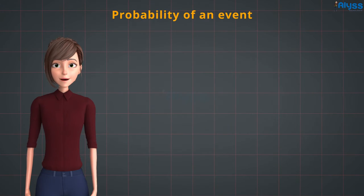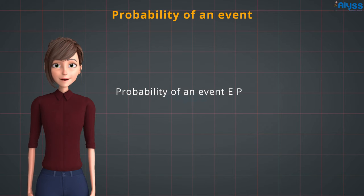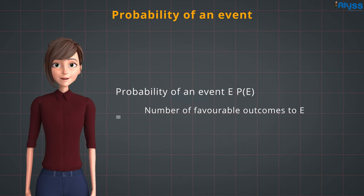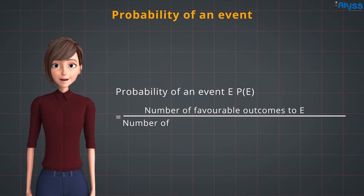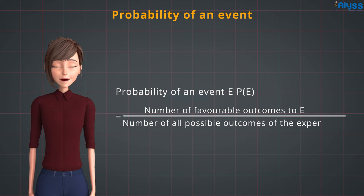Probability of an event. In an experiment, probability of an event E is written as P(E), and it is equal to the number of favorable outcomes of E divided by the number of all possible outcomes of the experiment.